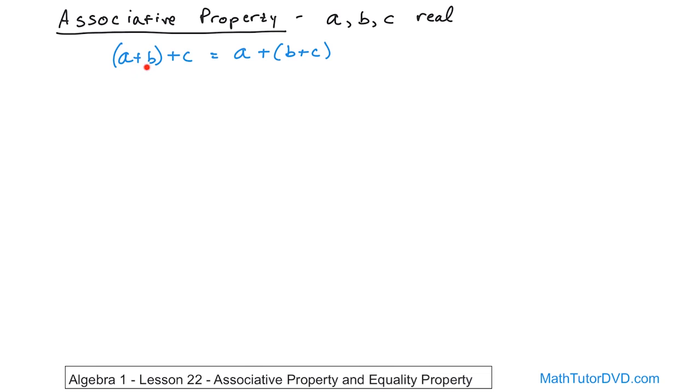So when the parentheses are here, you have to add A and B together first. That gives you this answer, and then to that you add the number C. Now that's going to give you some answer.